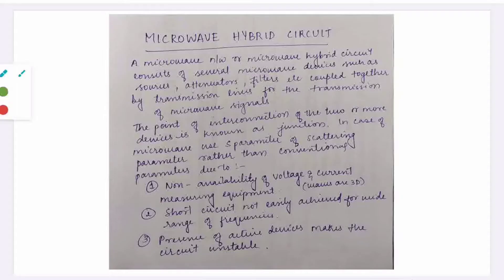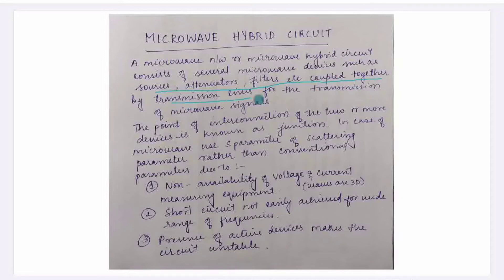What is a microwave hybrid circuit? It is a combination of many devices, or we can say a combination of networks. A microwave network or microwave hybrid circuit consists of several microwave devices such as sources, attenuators, filters, etc., coupled together by transmission line for the transmission of microwave signals.